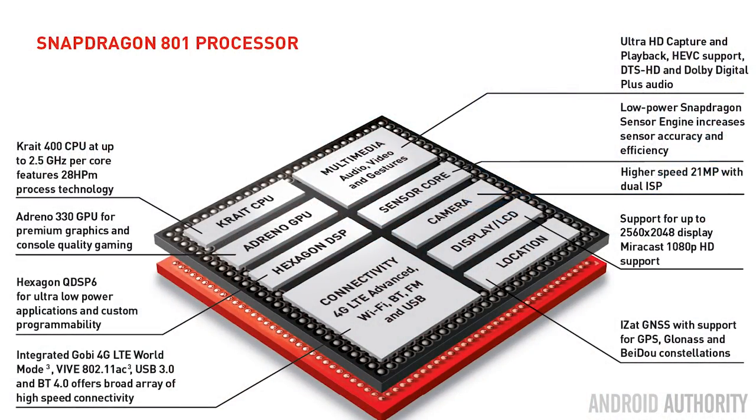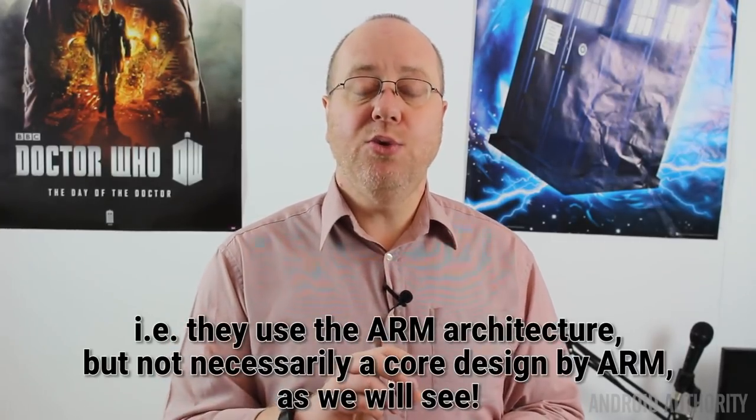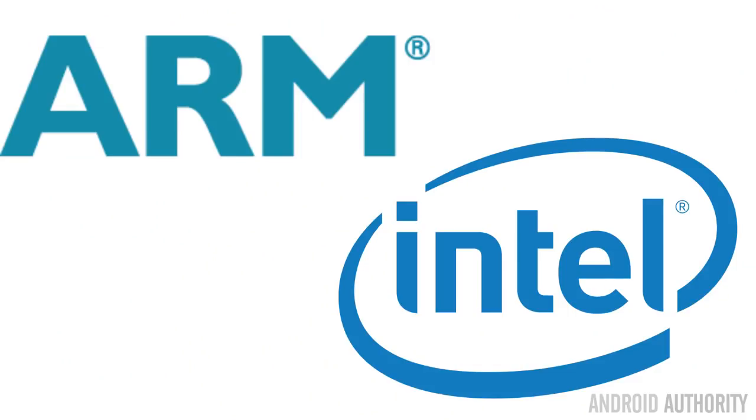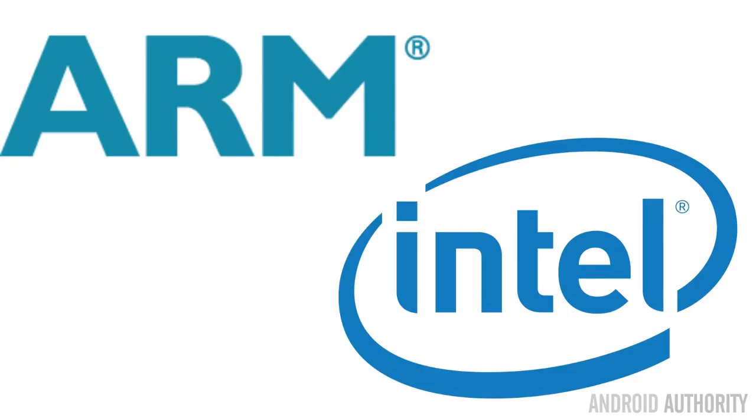So inside your smartphone is a thing called a system on a chip. It's a silicon chip with various components on it, including a CPU, a GPU, a memory controller, a DSP, and maybe a few other interesting bits and pieces. Now the design for the CPU can come from one of several places, including from Intel or from ARM. Now all iPhones and the vast majority of Android phones use CPU designs from ARM. So there are some differences between ARM and Intel when it comes to their business models and when it comes to the philosophy of designing their chips.